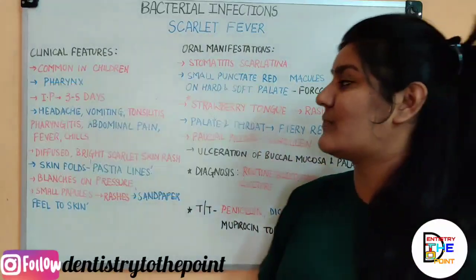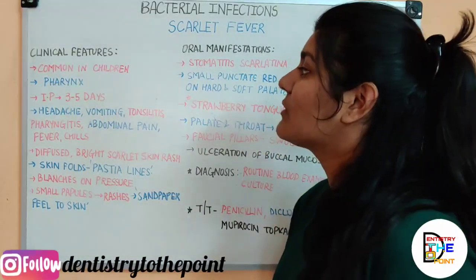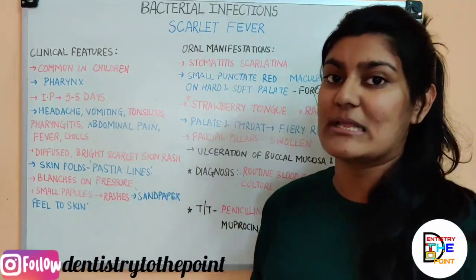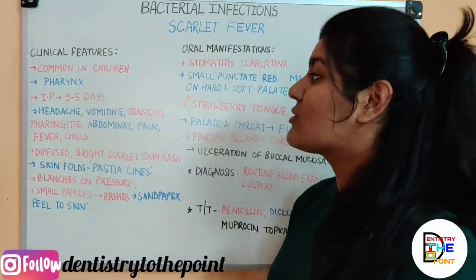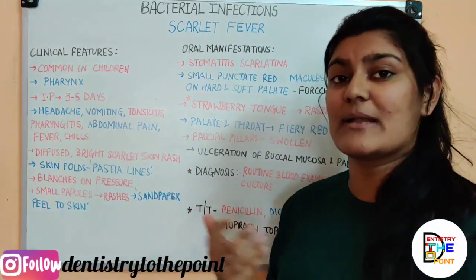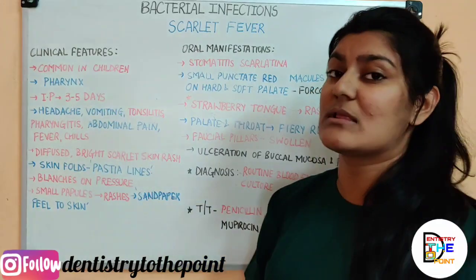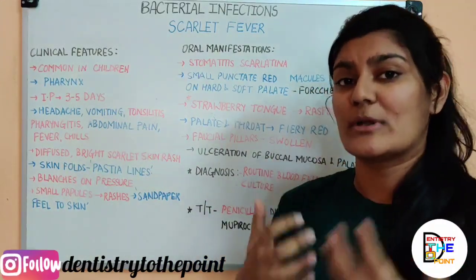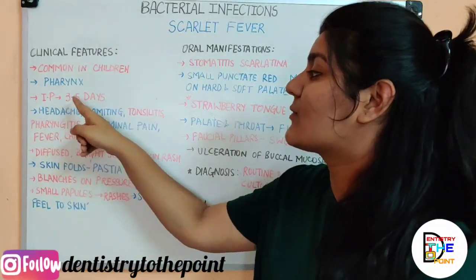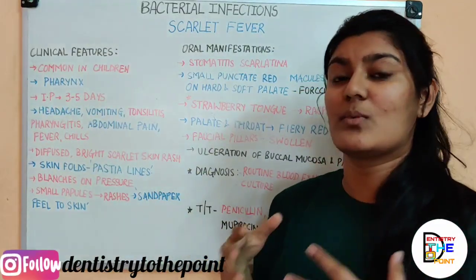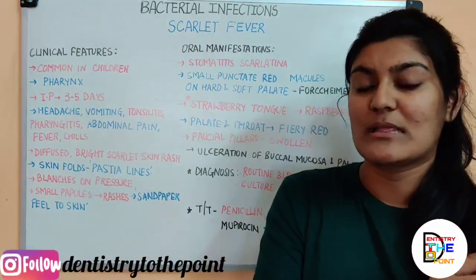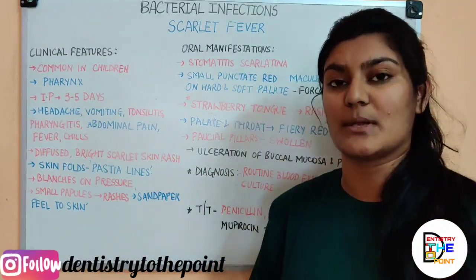Now let's see the clinical features. Scarlet fever is commonly seen in children. The organism is believed to enter the body through the pharynx. The incubation period is from 3 to 5 days. The incubation period means the period from the time of exposure to the disease to the appearance of the first symptom.